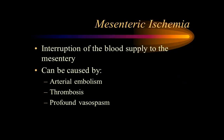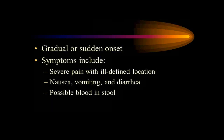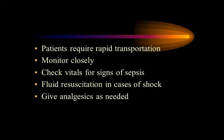Mesenteric ischemia is any interruption of blood supply to the bowel. It's common in elderly patients with atrial fibrillation not taking anticoagulants — a clot breaks off and causes an embolism. Cancer, thrombus formations, and vascular spasm are also causes. Gradual onset suggests tumors; sudden onset suggests atrial fibrillation. Symptoms: epigastric pain, nausea, vomiting, rectal bleeding. Rapid transport and watch for shock.